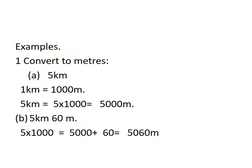Now children, I am going to explain conversion of length. First example: convert five kilometers into meters. You know that one kilometer is equal to one thousand meters. Therefore, five kilometers is equal to five multiplied by one thousand, which is equal to five thousand meters.